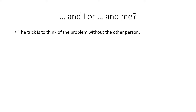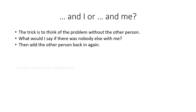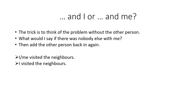The trick here is to think of the sentence without the other person. You work out what you would say if there was nobody else involved, and then when you've got that sorted out, you add the other person back in again. So would you say 'I visited the neighbours' or 'me visited the neighbours'? I think we'll agree that 'me visited the neighbours' is not correct. So the correct version is 'I visited the neighbours,' and when we add the other person back in, we have 'my wife and I visited the neighbours.'